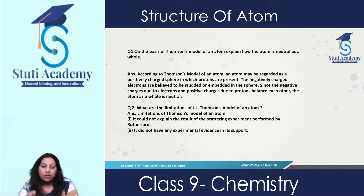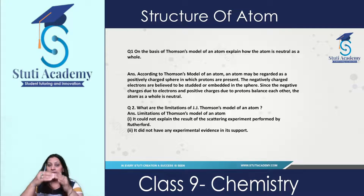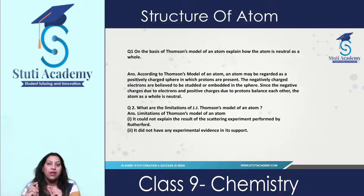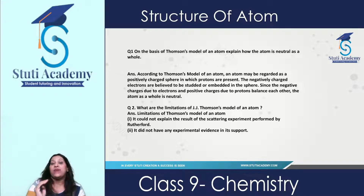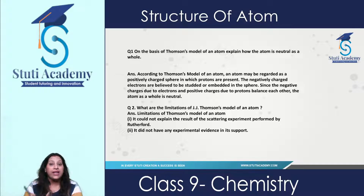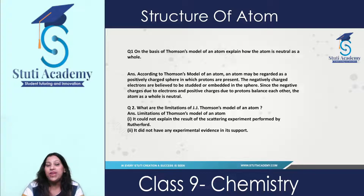What kind of question can come on J.J. Thomson's model? For example: 'On the basis of Thomson's model of an atom, explain how the atom is neutral.' According to J.J. Thomson's model, the atom is like a sphere in which electrons are embedded, and the complete sphere acts as a positive charge while the electrons carry negative charge. There are equal numbers of electrons and protons, so the entire atom becomes neutral in nature — because it contains equal positive and negative charges.